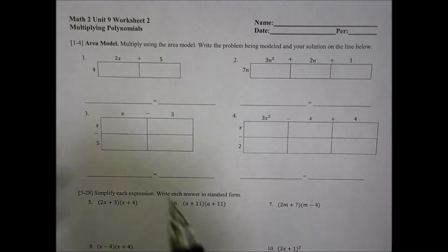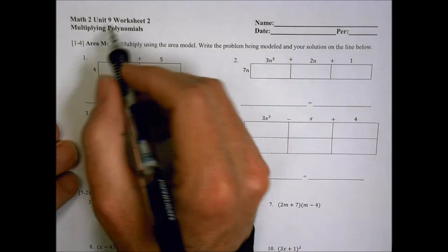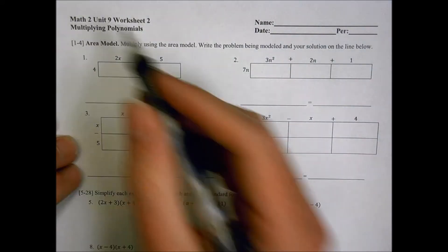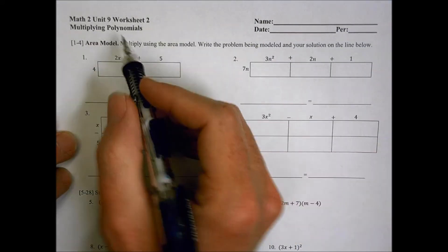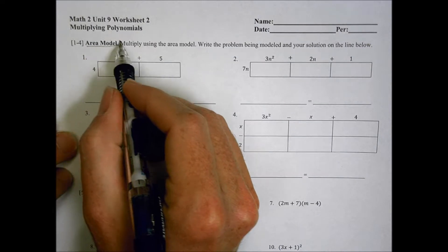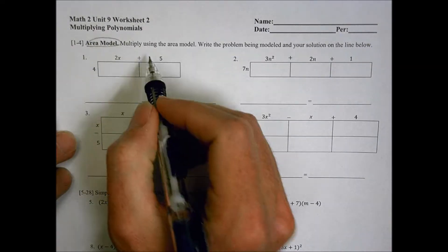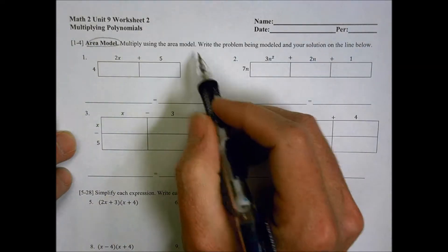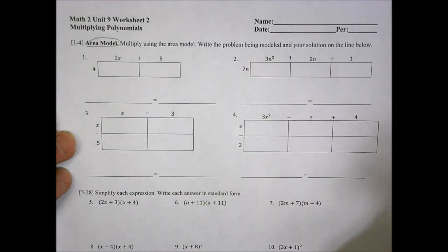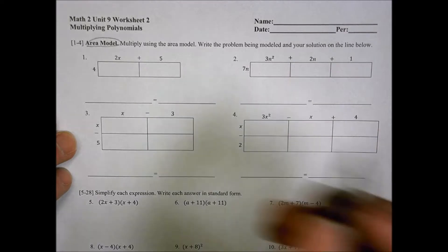Hi, this is Math 2, Unit 9, Worksheet Number 2, Multiplying Polynomials. Today we're going to be looking first off at using what's called an area model. We're going to multiply using the area model, and then write the problems that are being modeled in our solution.